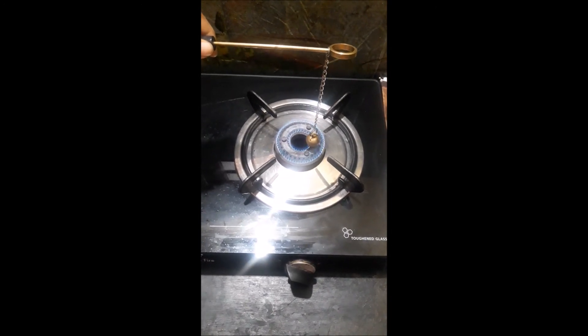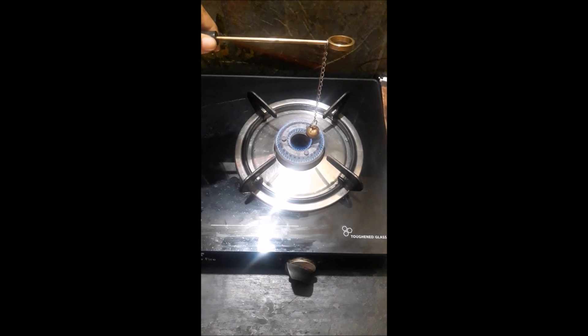Why didn't the ball go through the ring initially but went through it after some time? When the ball is heated, the atoms in the ball gain heat energy. They start vibrating and force each other apart. As a result, an expansion takes place. That's why the ball did not go through the ring.